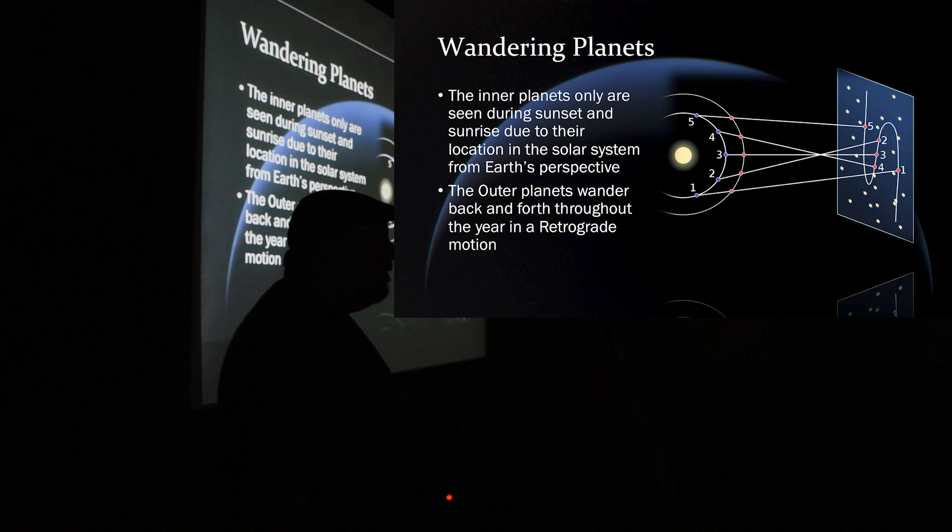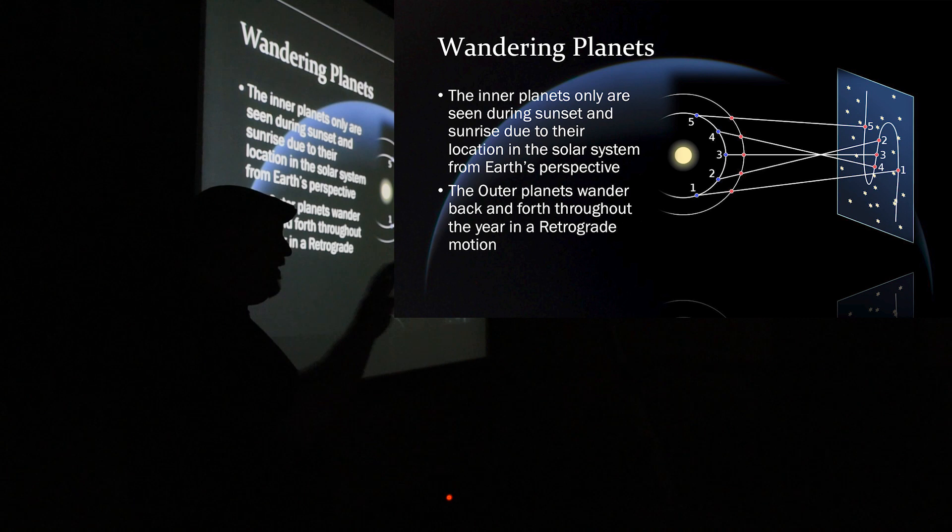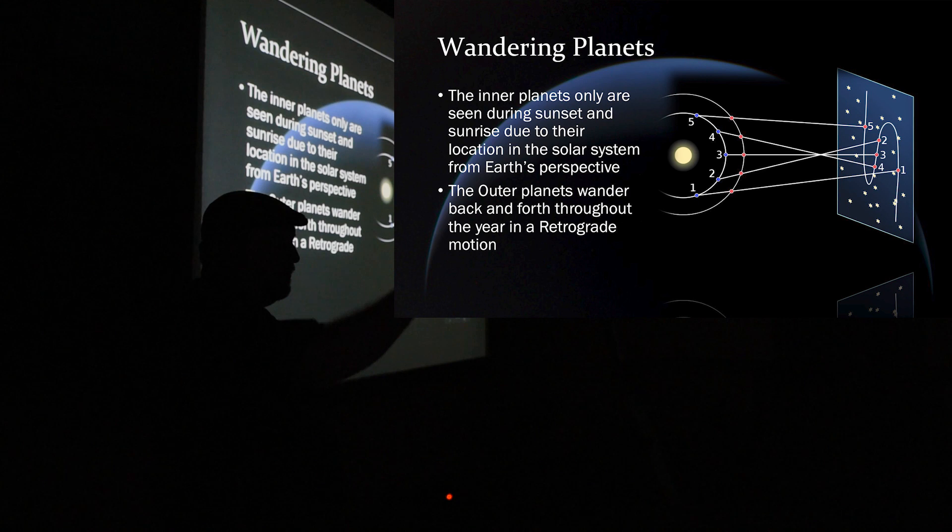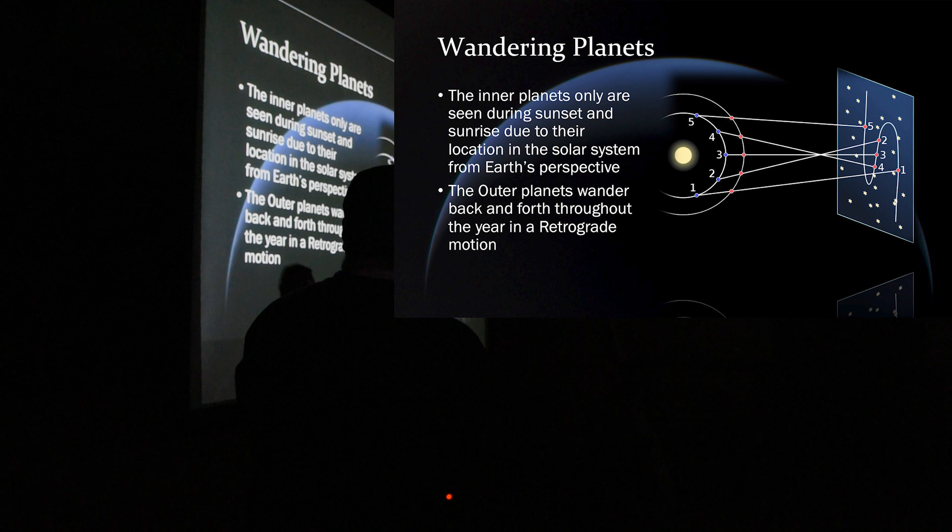The inner planets don't really experience this because we only see those during the sunrise and the sunset. So, when you see the evening star, the morning star, that's Venus. It will never, never be on the opposite side of the sky. It will always stay close to where the sun is because they are inside the solar system, or inside the orbit of Earth. However, the outer planets have this retrograde motion.